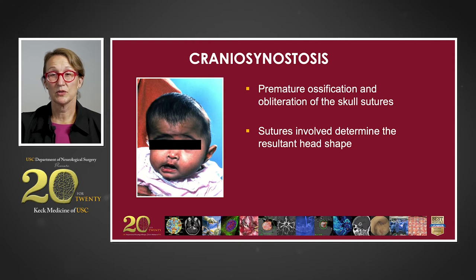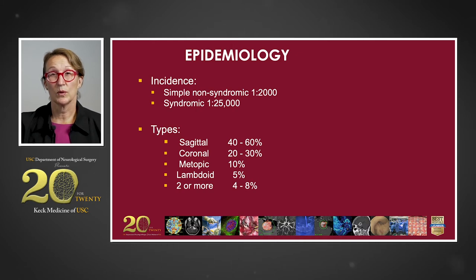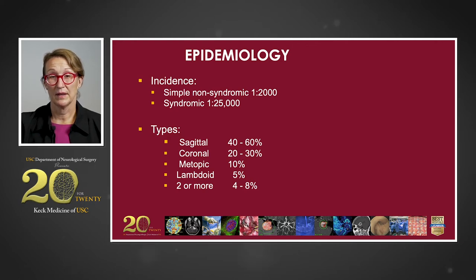Craniosynostosis is premature ossification and obliteration of the skull sutures, and the sutures involved determine the resultant head shape of the child. The epidemiology shows us that the incidence in simple, non-syndromic craniosynostosis is one in 2,000 births. In syndromic synostosis, it's approximately one in 25,000 births.